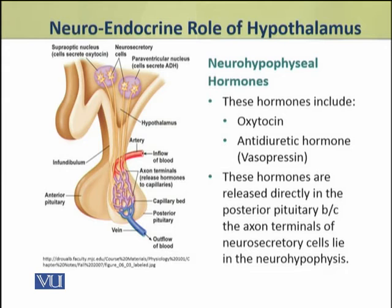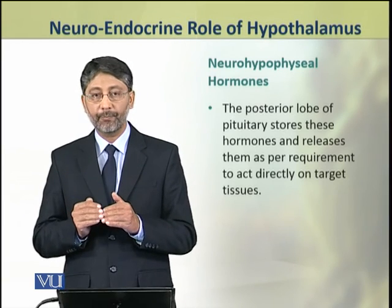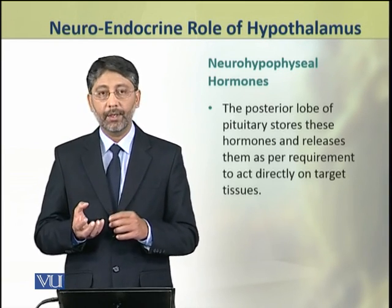Now we shall discuss the neurohypophysial hormones of hypothalamus. These hormones include oxytocin and anti-diuretic hormone, also known as vasopressin. These hormones are synthesized by the hypothalamus and released directly into the posterior pituitary, because the axon terminals of neurosecretory cells of hypothalamus lie in the posterior lobe of the pituitary, that is called neurohypophysis.